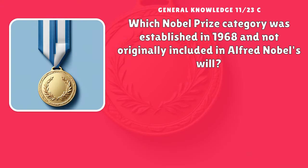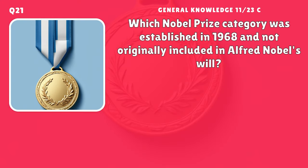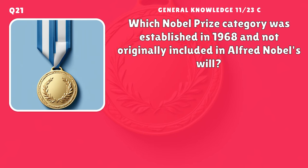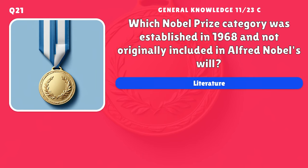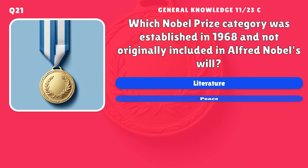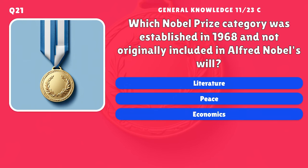Which Nobel Prize category was established in 1968 and not originally included in Alfred Nobel's will? A) Literature, B) Peace, C) Economics, D) Medicine.